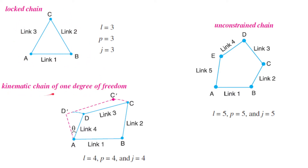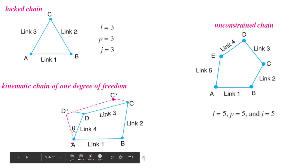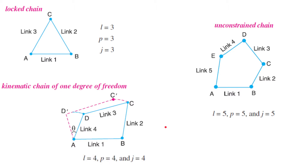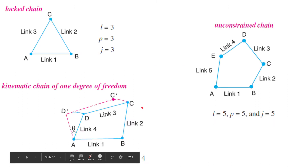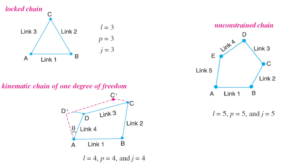For the one-degree-of-freedom example, we have four pin joints, four pairs, and four links. When we put the l, p, and j values into the formula, we see LHS equals RHS in both relations. In such a situation we can say the given chain makes a kinematic chain, and this can be used for transmitting force from the first link to the last link in a definite way.